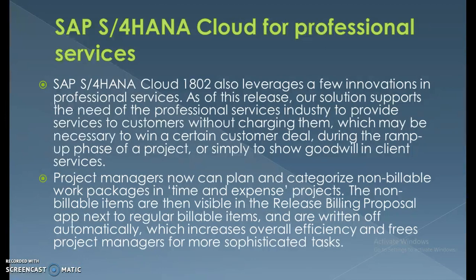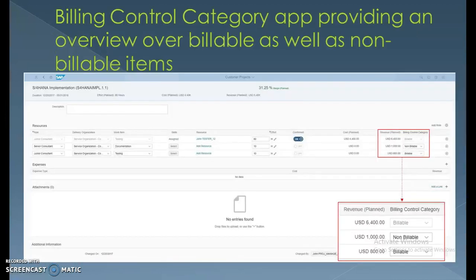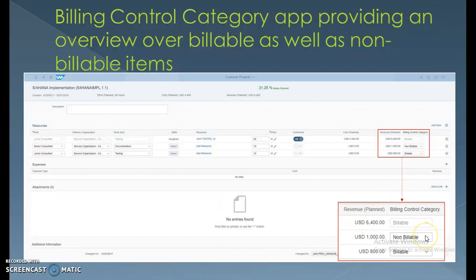This increases overall efficiency and frees project managers for more sophisticated tasks. There are many automated processes that managers currently do manually. The Billing Control Category app provides an overview of both billable and non-billable items, which can be easily categorized and processed.